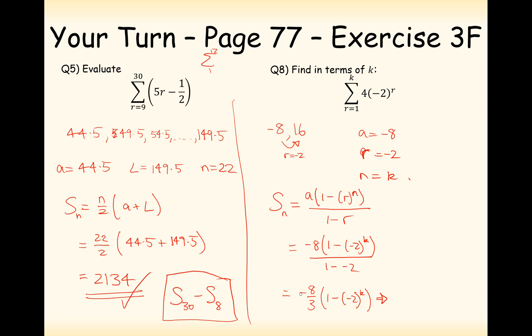So minus 8 over 3 times by 1 minus minus 2 to the power of K. And we could probably include the negative inside this bracket here, so it's going to be 8 over 3 times minus 2 to the power of K minus 1. So that would be how I would leave my final answer for question 8 here.